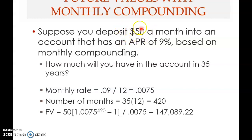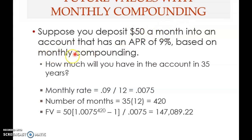Suppose you deposit $50 a month — that's already an annuity, a stream of fixed cash flows — into an account with an APR of 9%, based on monthly compounding, so m = 12. How much would you have in 35 years? The term is 35 years, but because the payment and compounding are both monthly, these two must agree. Payment is monthly, so compounding must also be monthly.